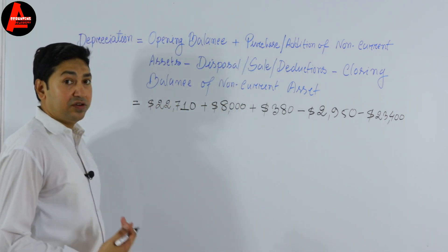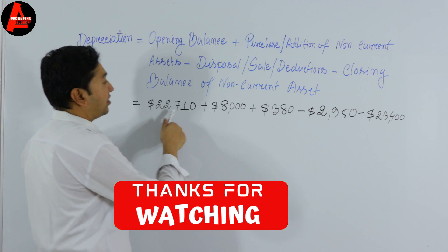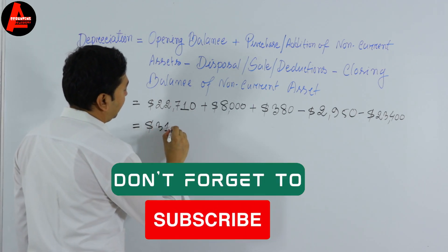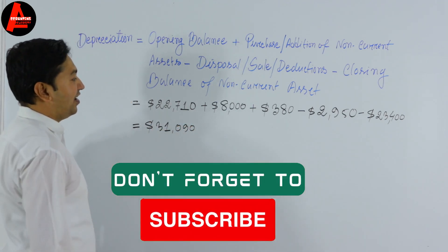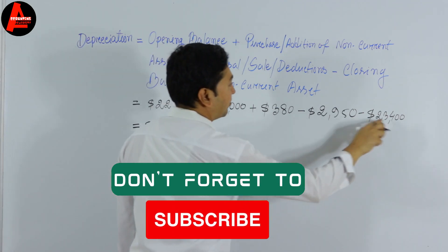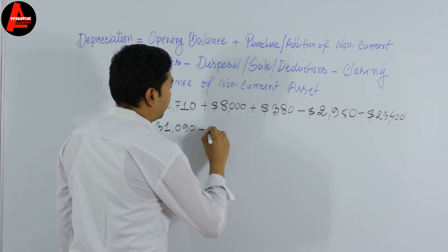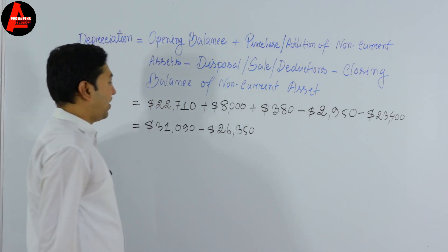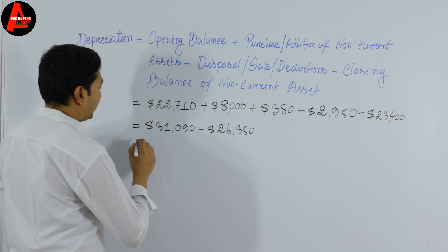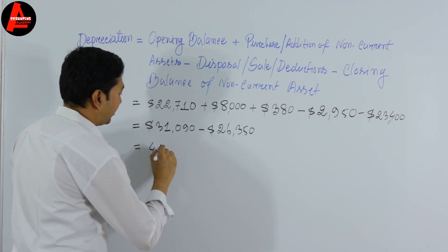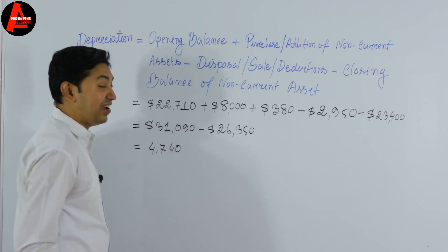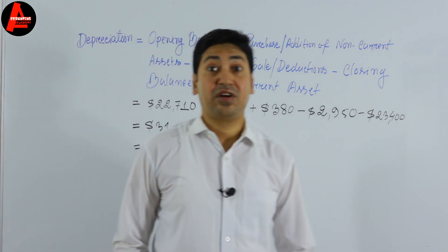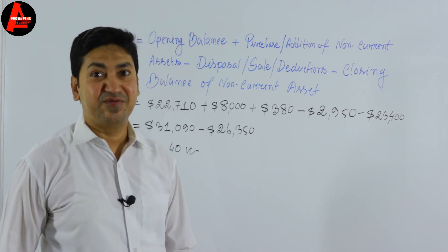Now let us calculate. Adding the opening balance and additions: $22,710 + $8,000 + $380 = $31,090. Adding the amounts to subtract: $2,950 + $23,400 = $26,350. Subtracting: $31,090 minus $26,350 equals $4,740. So the depreciation amount using the revaluation method is $4,740.